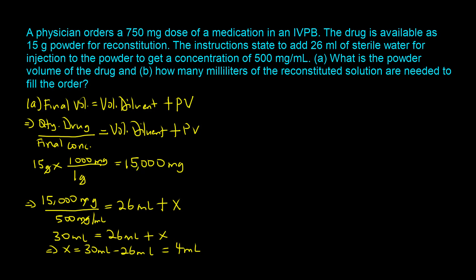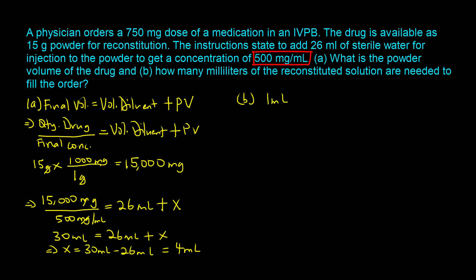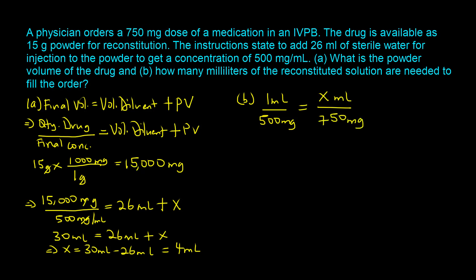We can now solve part B. The question asks how many milliliters of reconstituted solution are needed to fill the order. The approach is to use the final concentration of 500 milligrams per milliliter, meaning each milliliter contains 500 milligrams of drug. We set up a proportion: X equals 1 milliliter divided by 500 milligrams times 750 milligrams. The milligrams cancel out and X equals 1.5 milliliters.